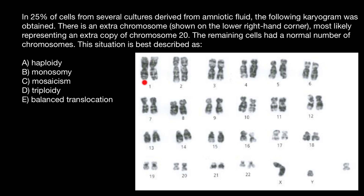It can be a maternal chromosome or paternal — this is a random process. We can also find only half of our genome in male gametes, which are sperm. So this is what we call haploidy. Monosomy would be a situation when we have only one chromosome from one of the pairs of chromosomes.